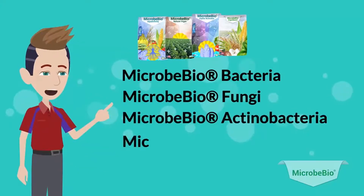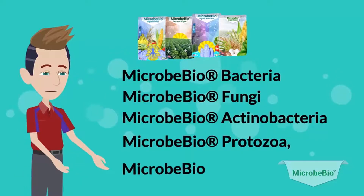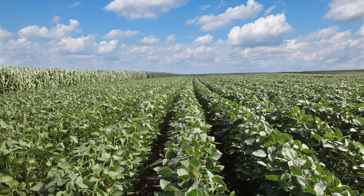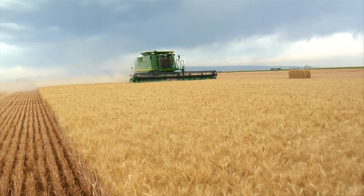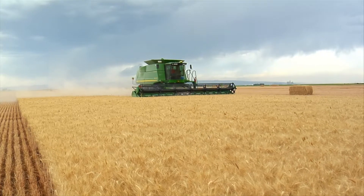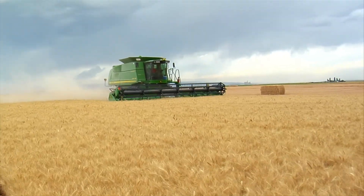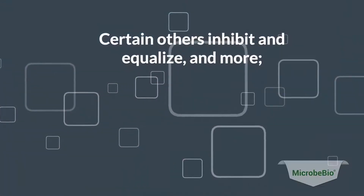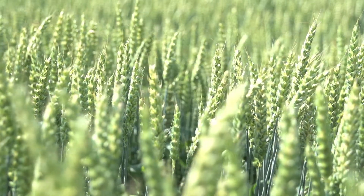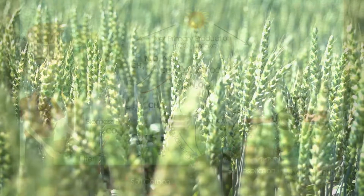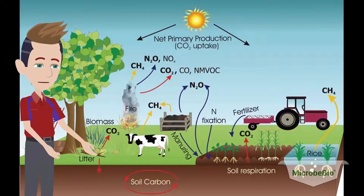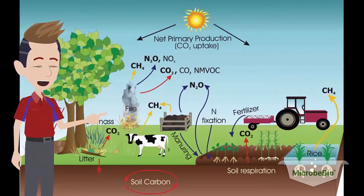Microbe Bio products are packed full of rich dynamic inputs such as Microbe Bio bacteria, Microbe Bio fungi, Microbe Bio antibacterial, Microbe Bio protozoa, and Microbe Bio algae — all vital to creating a healthy soil environment for crops to prosper. Each ingredient carries out specific and critical tasks: some act to recycle and reuse material, others function to regenerate and facilitate growth, certain others inhibit and equalize, and more act as mobilizers, producers, or decomposers. Our customized mix is a special blend of biological catalysts designed to work together harmoniously to cultivate proper nutrients in the soil.